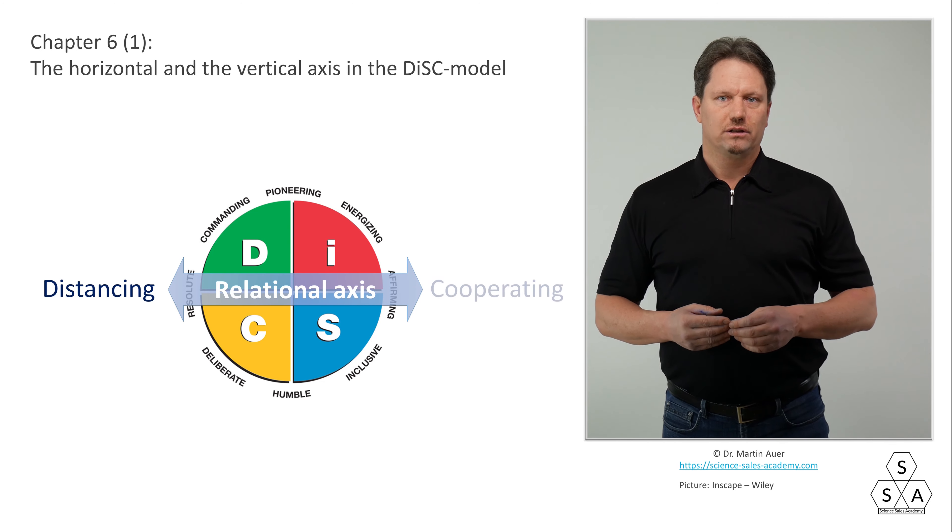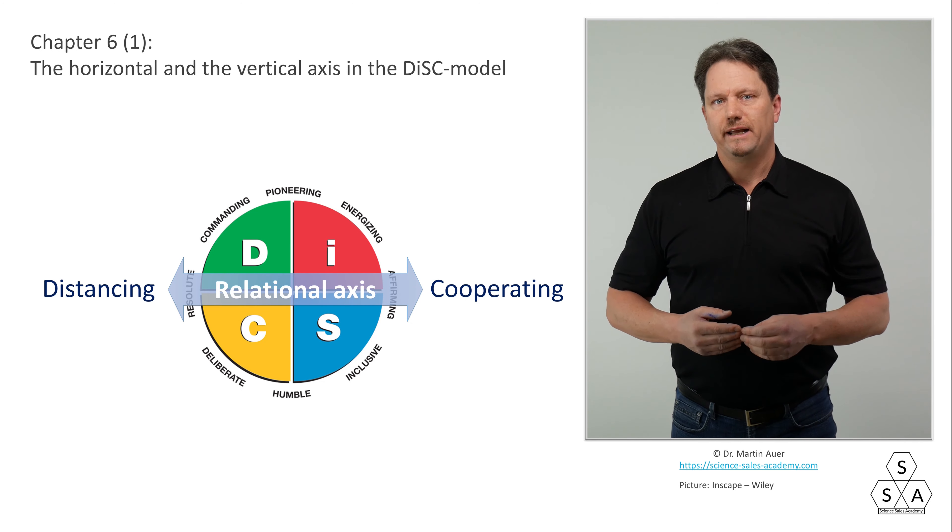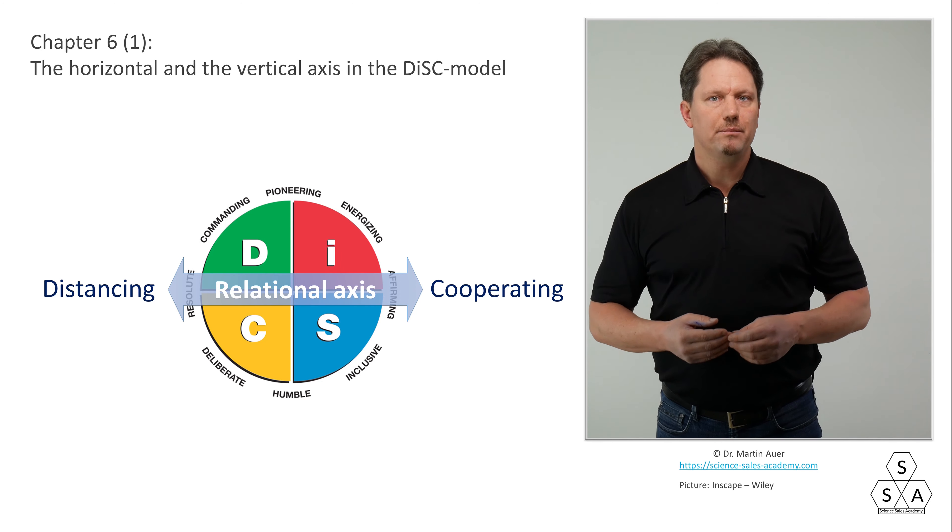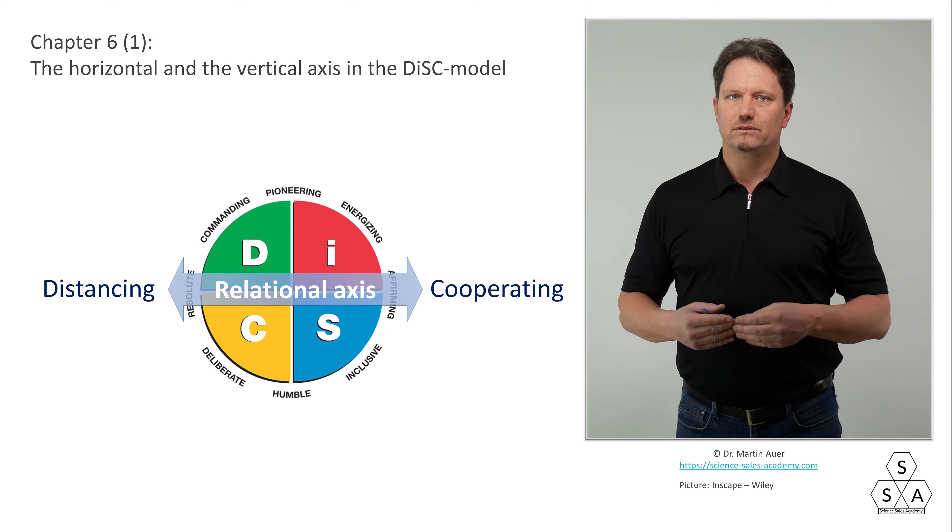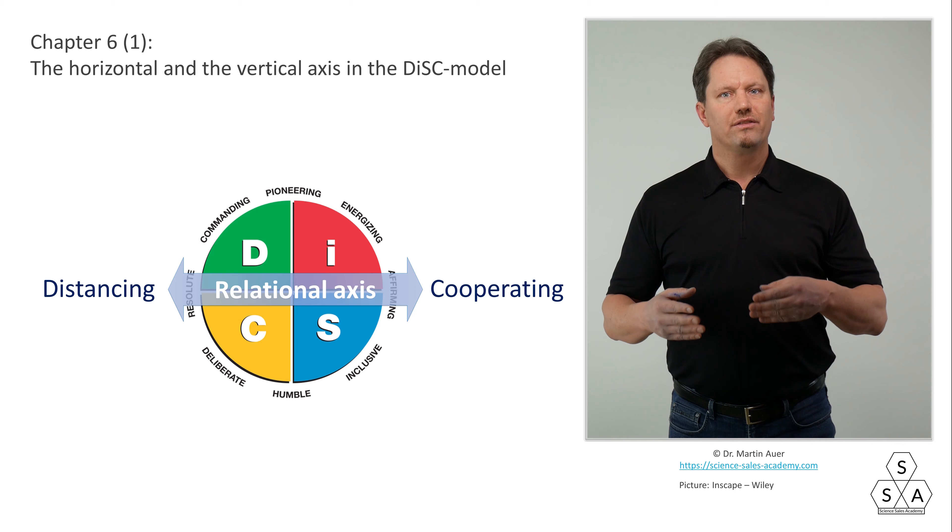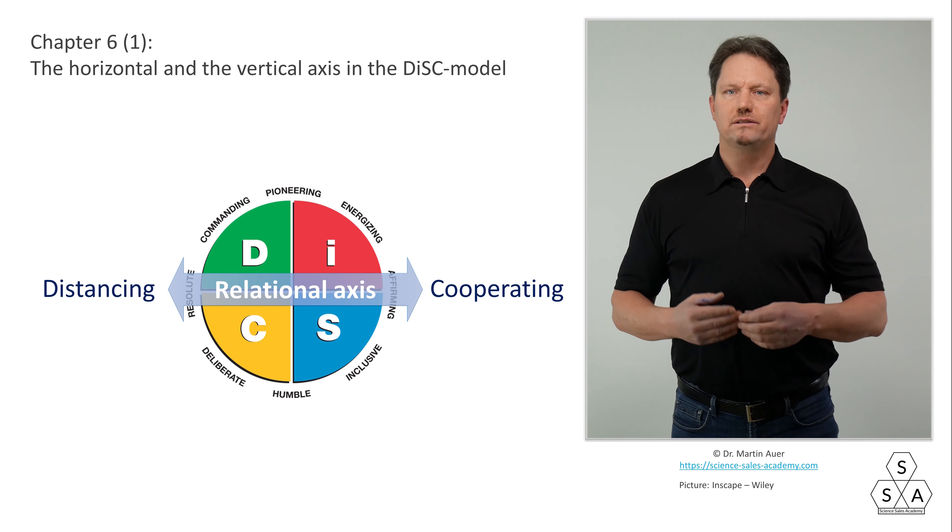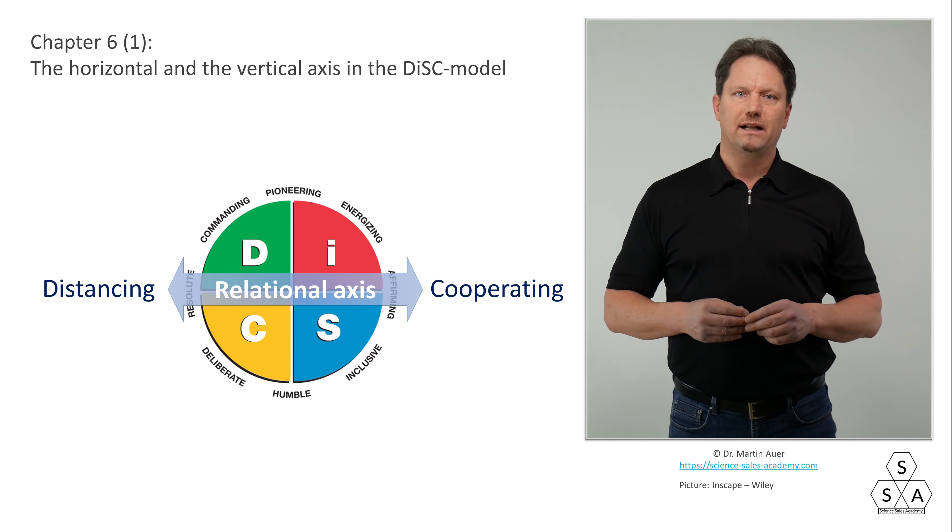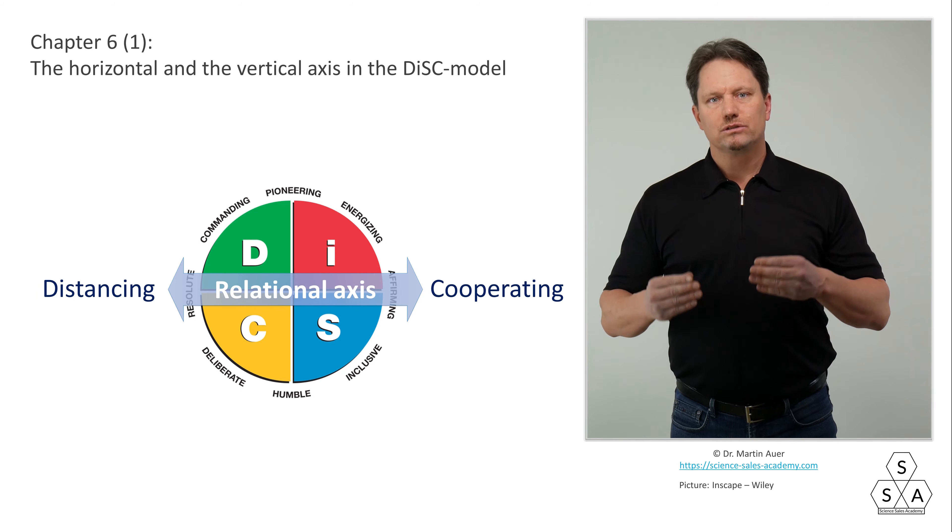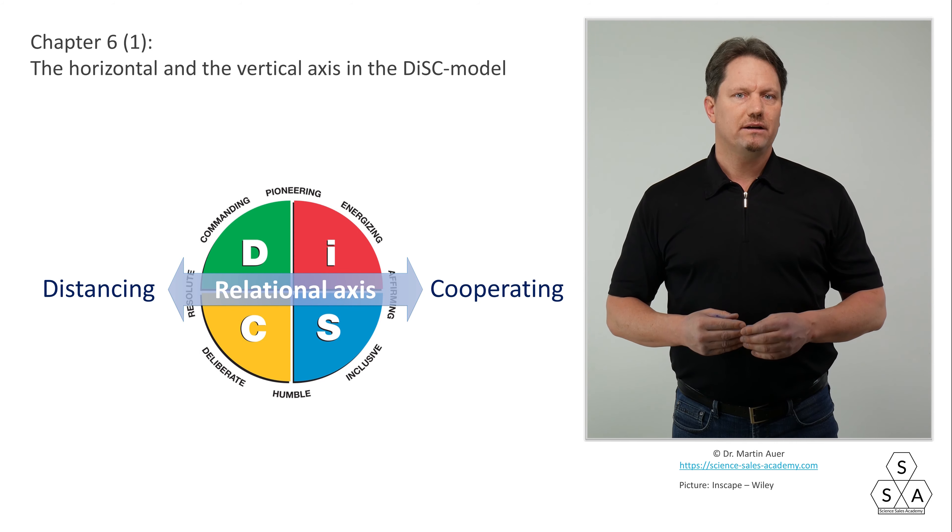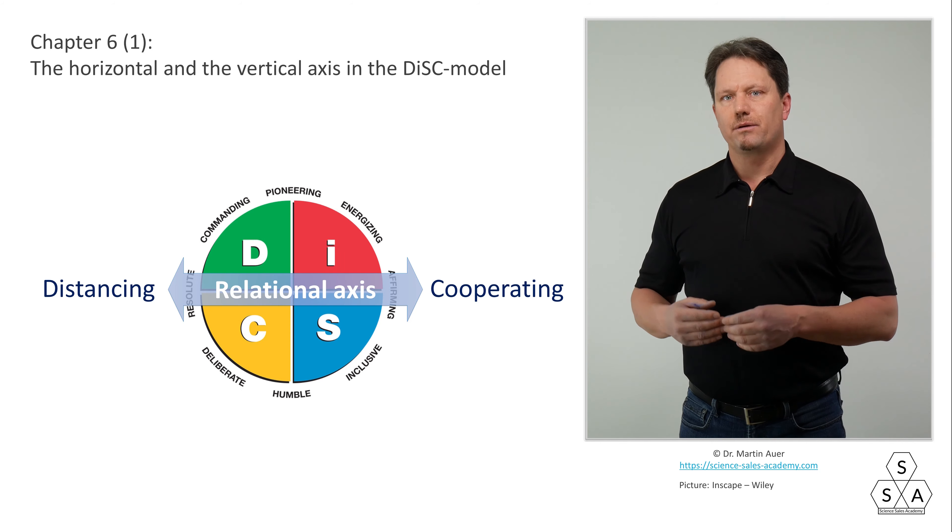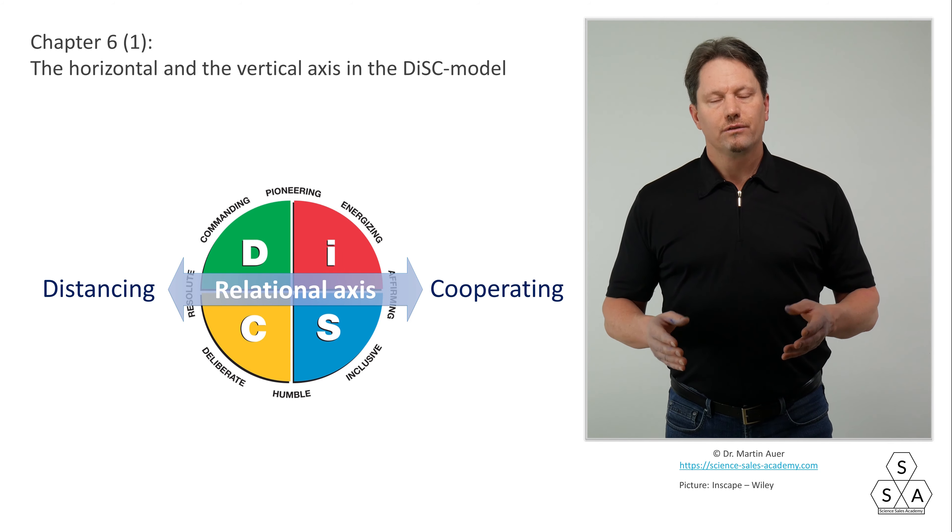At the right end of the horizontal axis, the relational axis, at 3 o'clock position, are the people whose primary need is to ally and cooperate with other people. For them, primarily the person, the group, the relationship is what is important. Only then come results, projects, numbers. For them, it's about people. Here in this area, you will find warm people who are generally very open to other people. This was the horizontal axis.